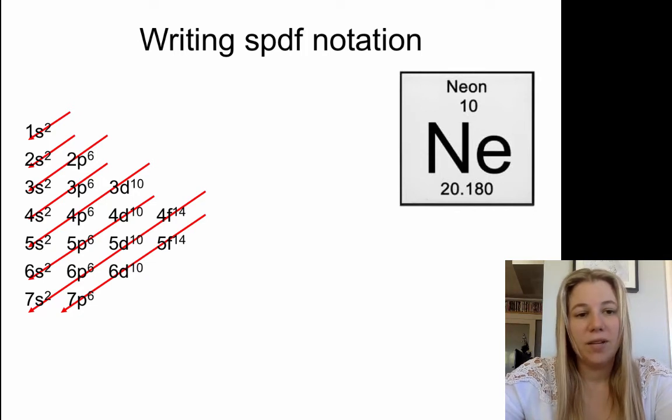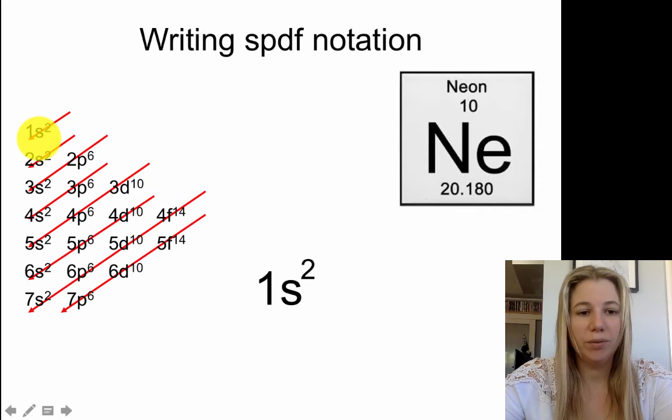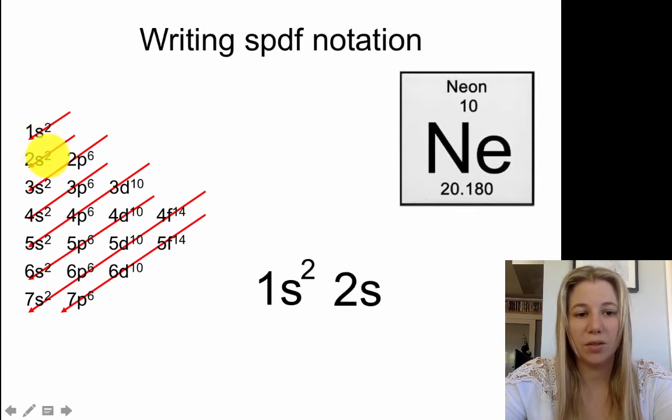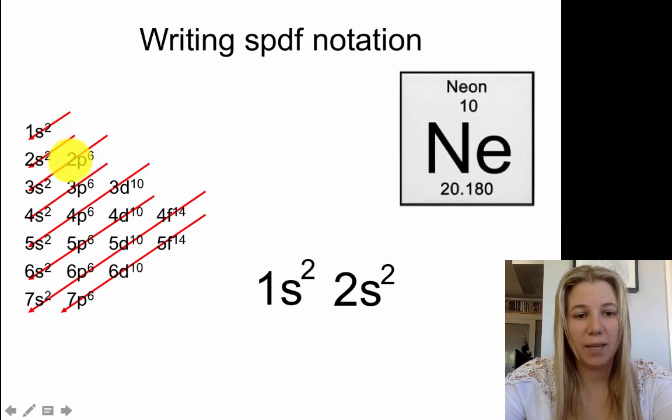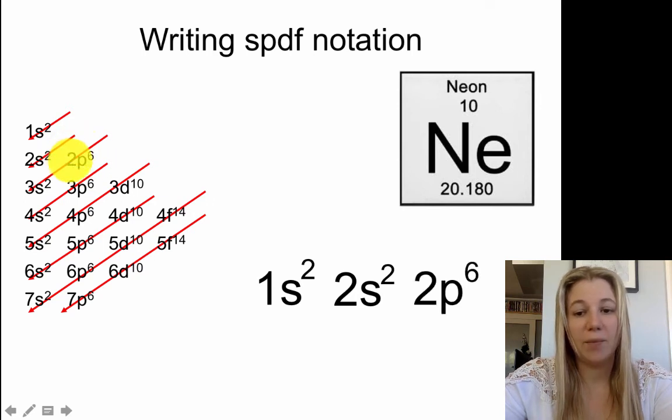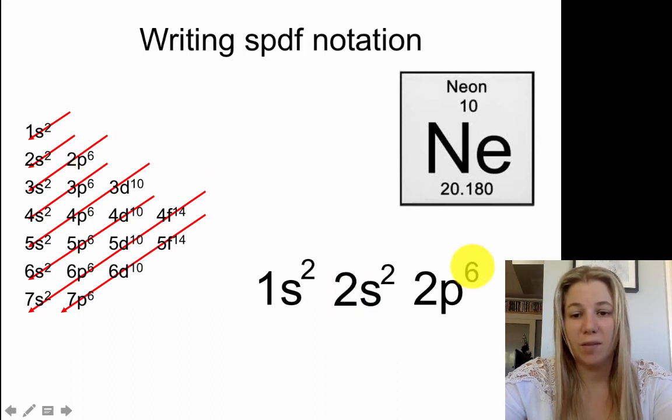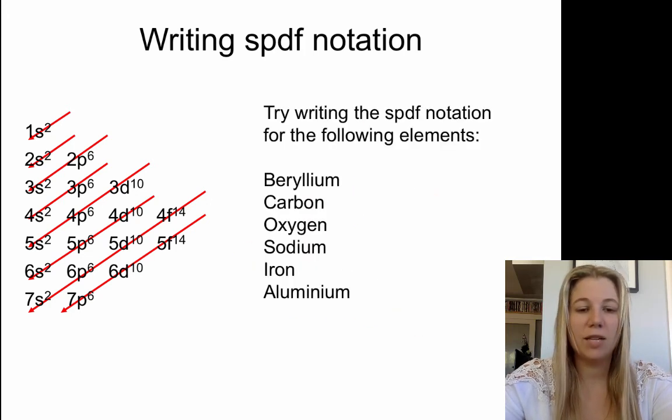Neon. First two electrons are going to be in this 1s2 orbital. The next two electrons are going to go into the 2s, so 2 there. So now we've used four of our 10 electrons. Now the next one we jump to is 2p6, and all the last six electrons are going to fit there. So here we've got 6 plus 2 plus 2, it's got 10 electrons. So that's right for neon and that would be the notation for neon.